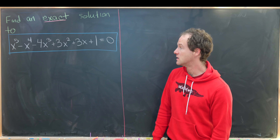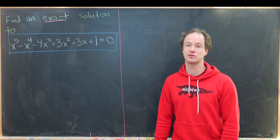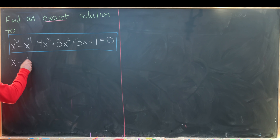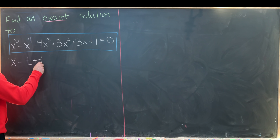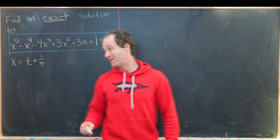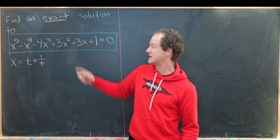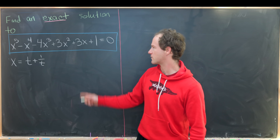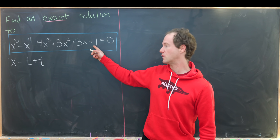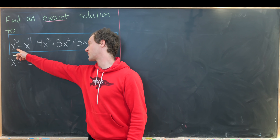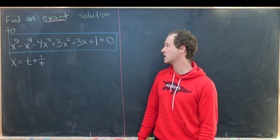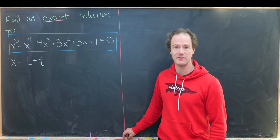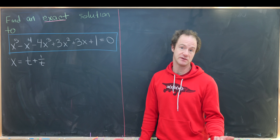We're going to start with a substitution that is actually pretty common for finding roots of higher degree polynomials: we'll set x equal to t plus 1 over t, then plug that into the polynomial and expand. If we plug t plus 1 over t in, we'll need formulas for a binomial to the fifth, fourth, third, second, and first powers.